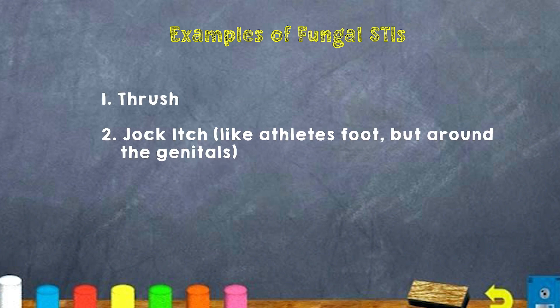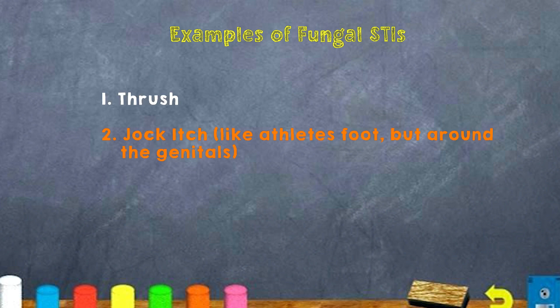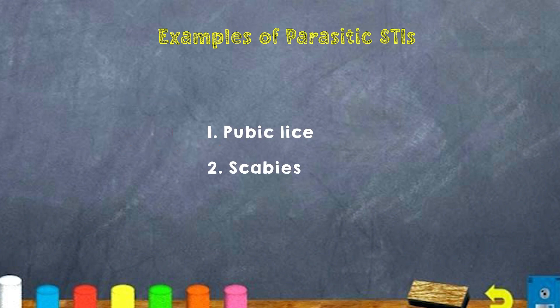Some examples of fungal STIs, or STIs caused by a fungus, are Thrush and Jock itch — which is something like athlete's foot but around the genitals. Some examples of parasitic STIs are pubic lice and scabies.